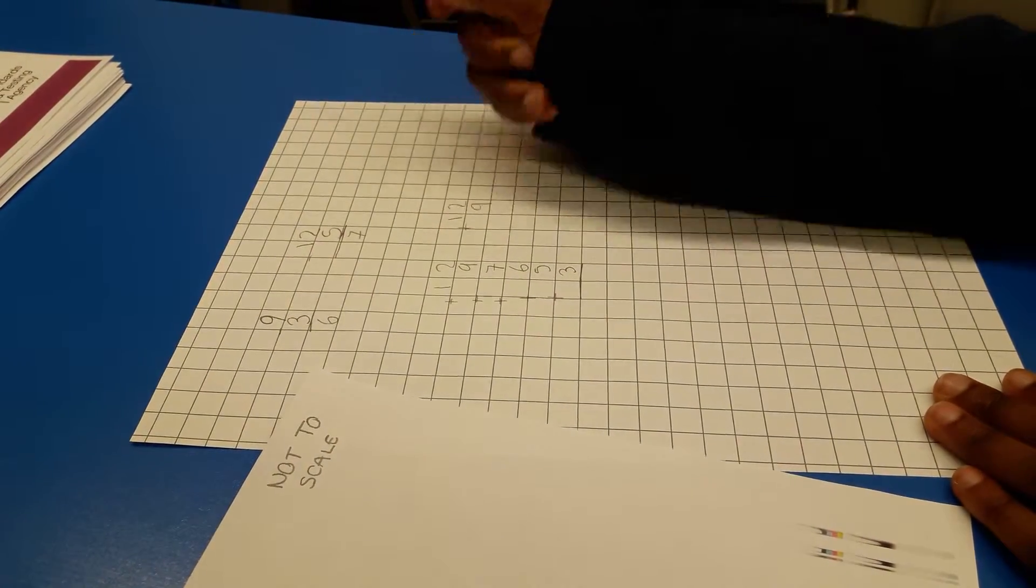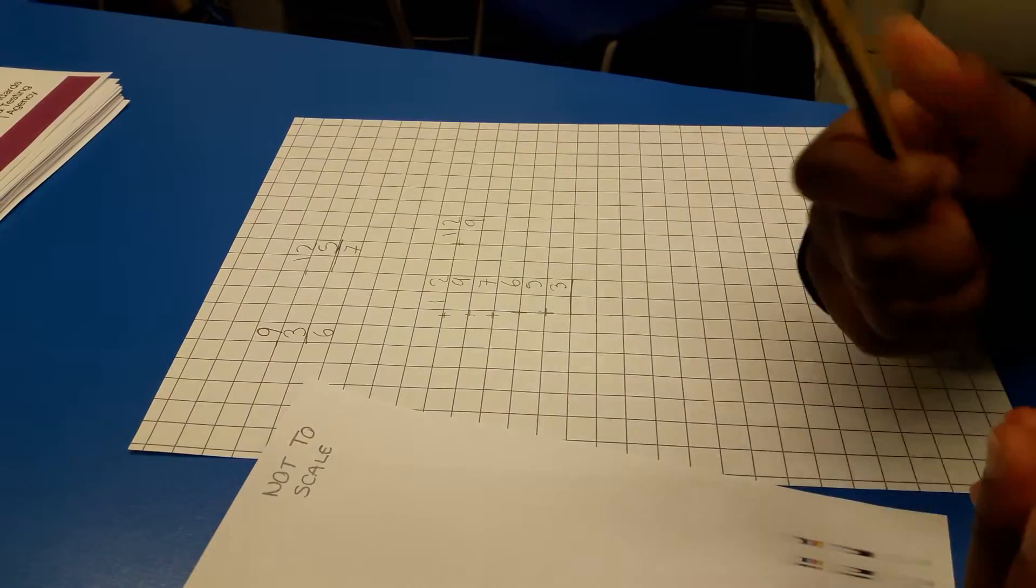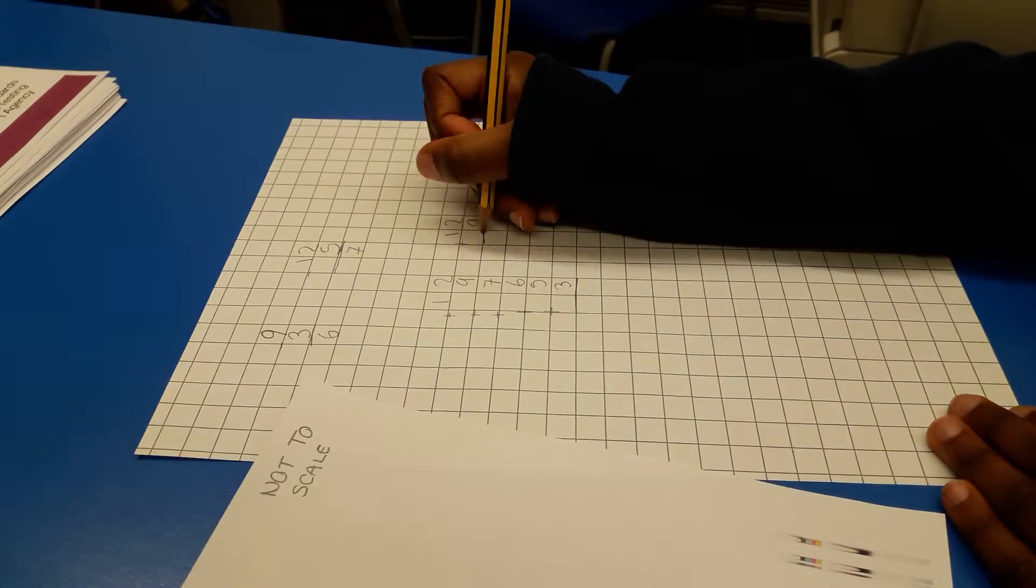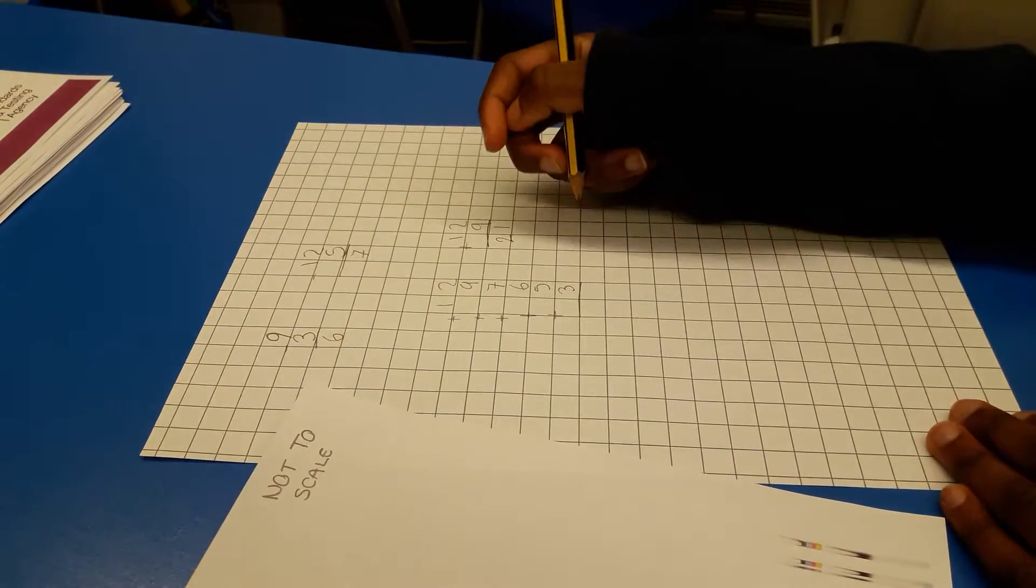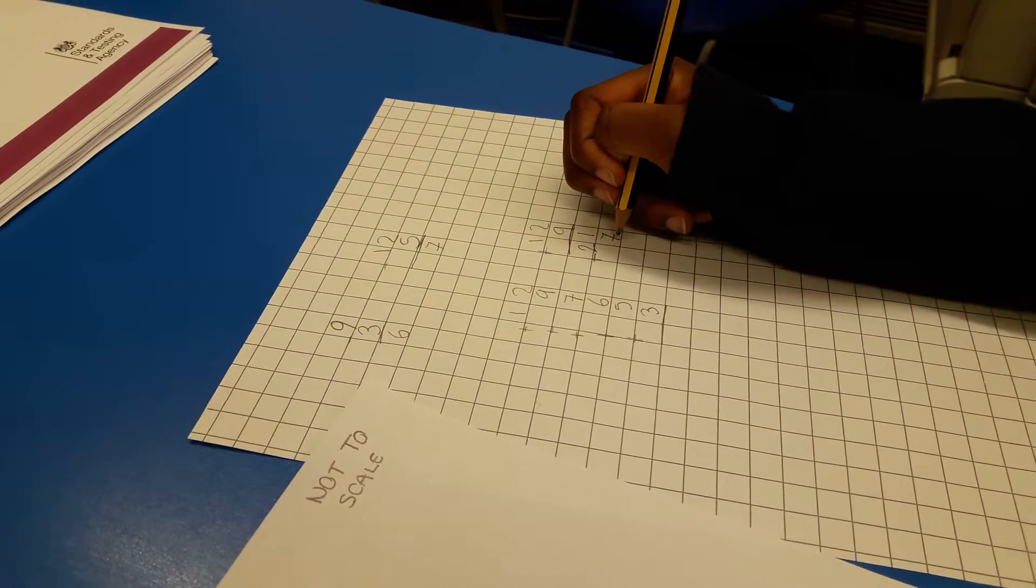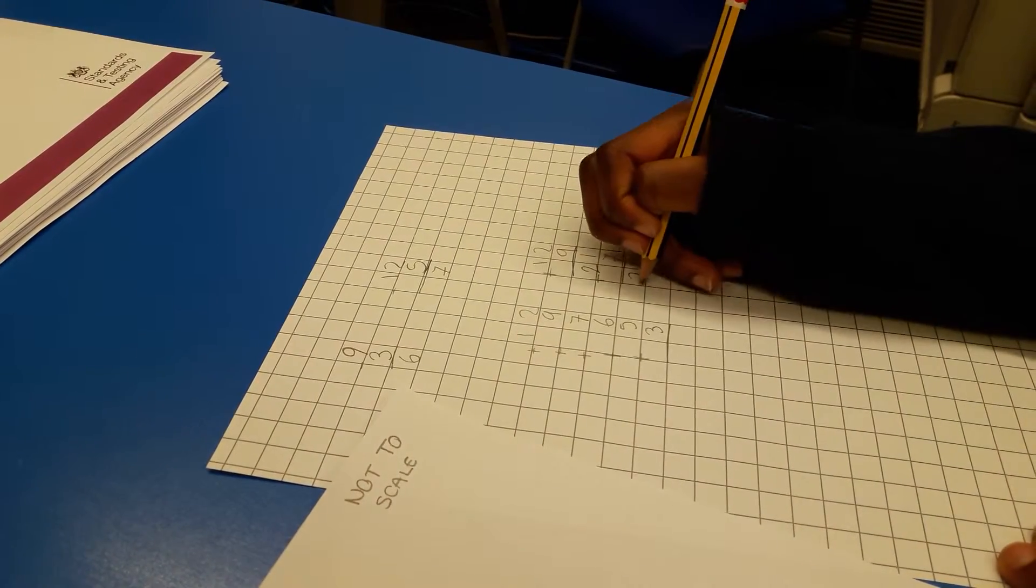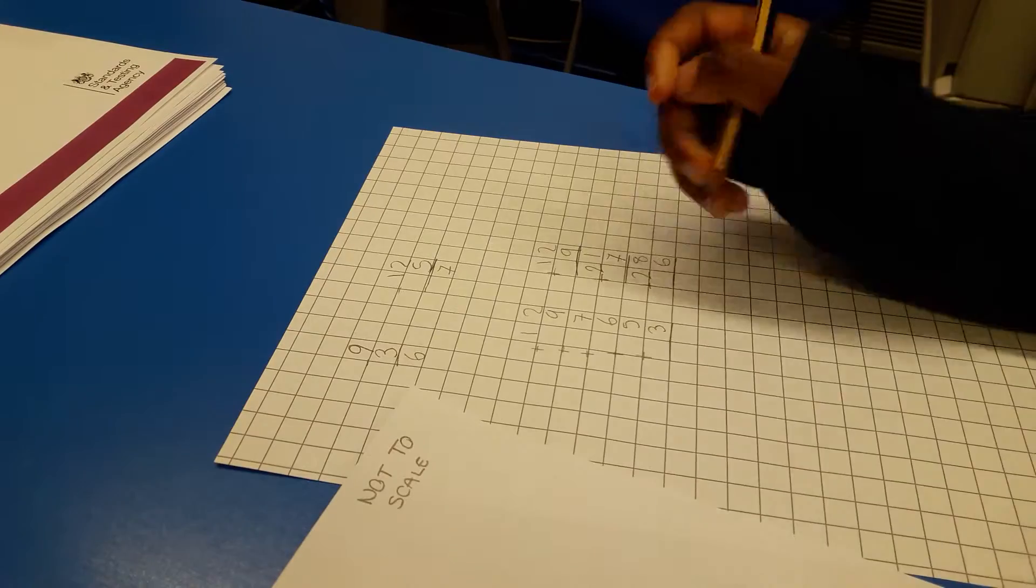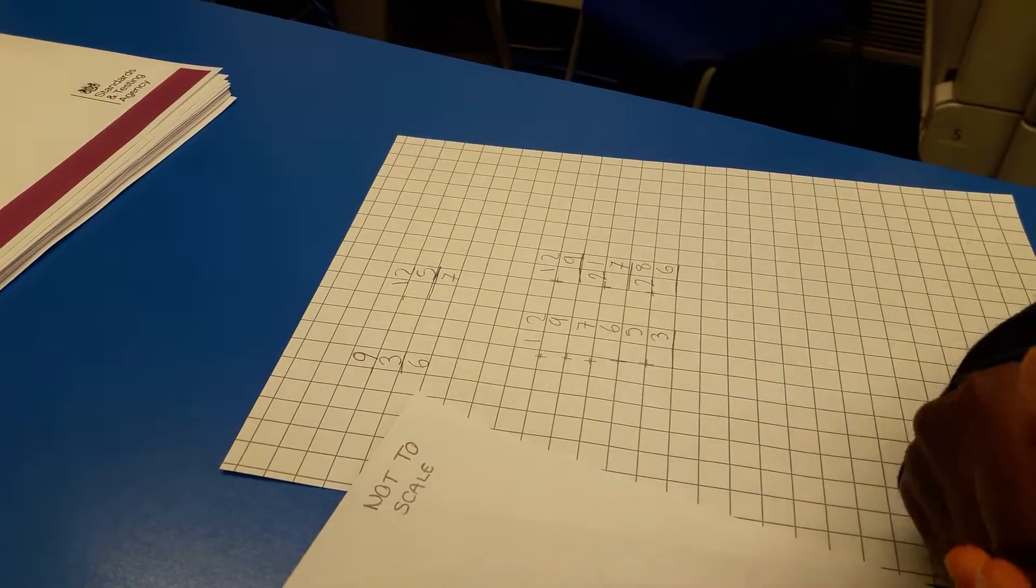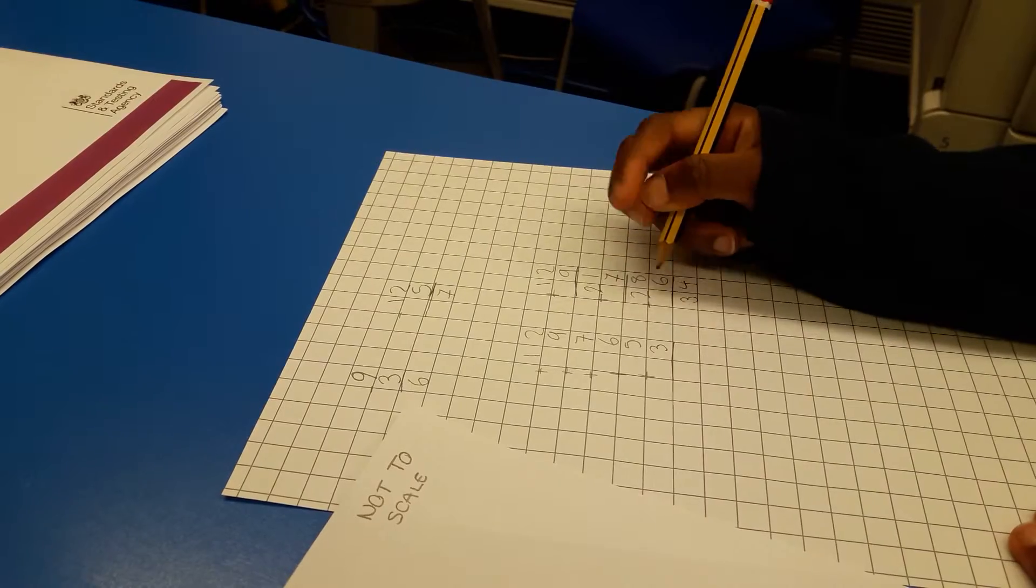So twelve plus nine: thirteen, fourteen, fifteen, sixteen, seventeen, eighteen, nineteen, twenty, twenty-one equals twenty-one. And then twenty-one add seven equals twenty-eight. Then twenty-eight plus six: twenty-nine, thirty, thirty-one, thirty-two, thirty-three, thirty-four. You get thirty-four, then thirty-four plus five.